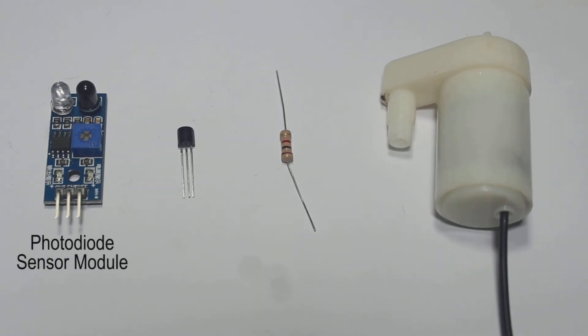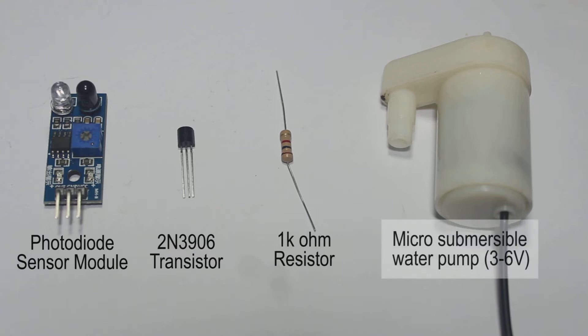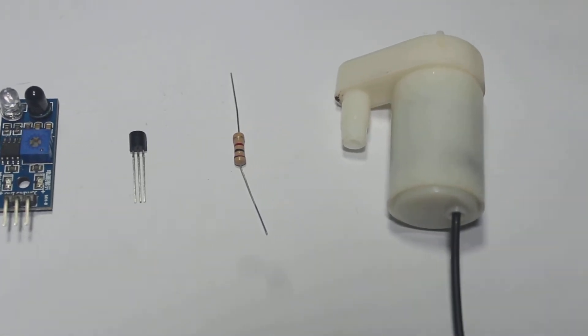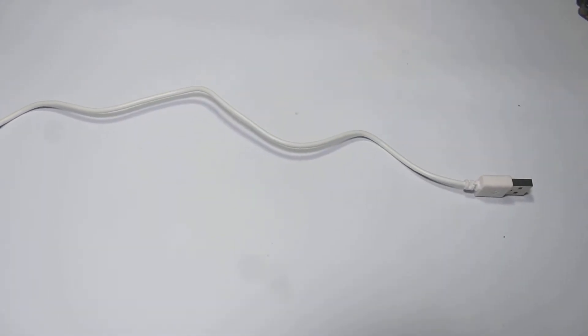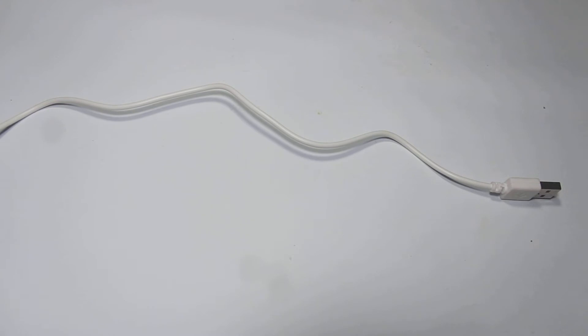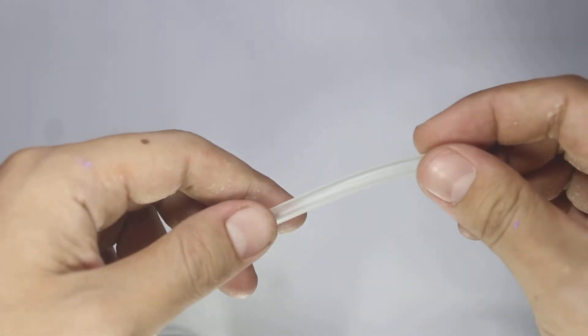A photodiode sensor module, 2N3906 transistor, 1k ohm resistor, micro submersible water pump, an old USB cable for power that you can get from a power bank, a water container (you can use whatever water container you like), and a mini flexible water tubing.